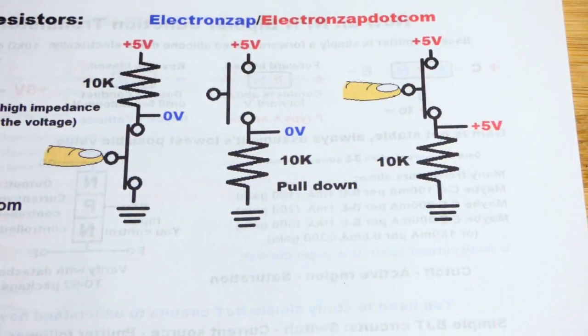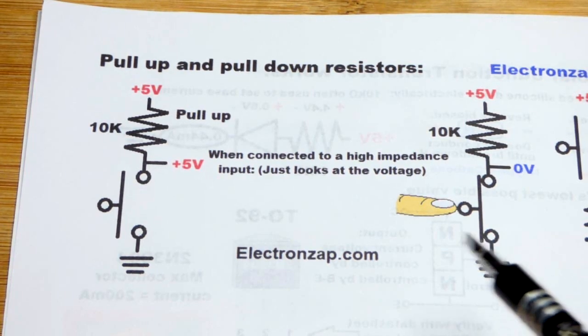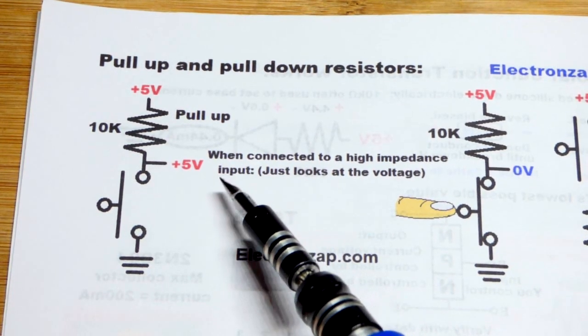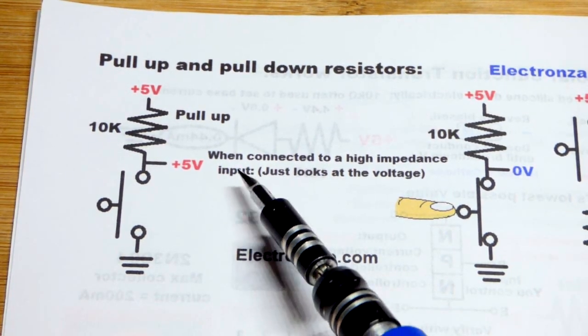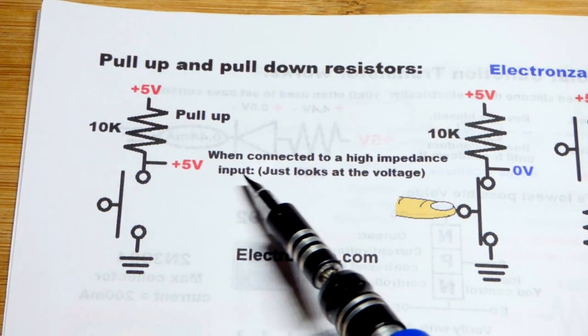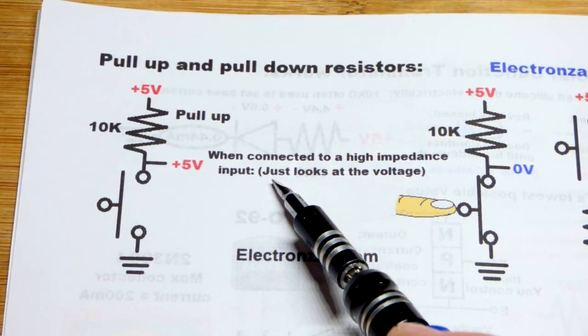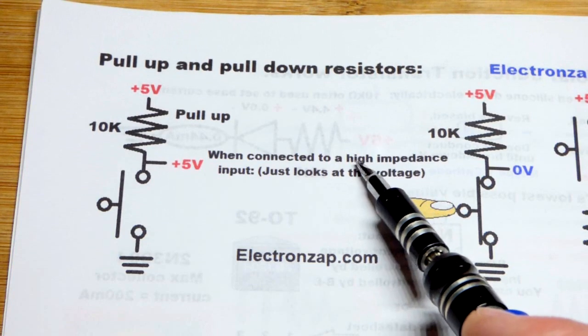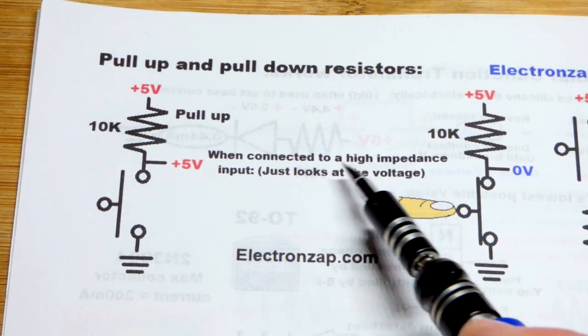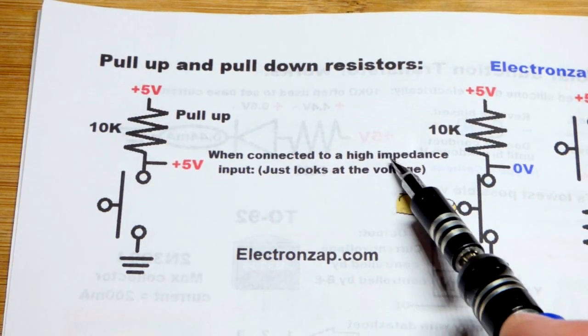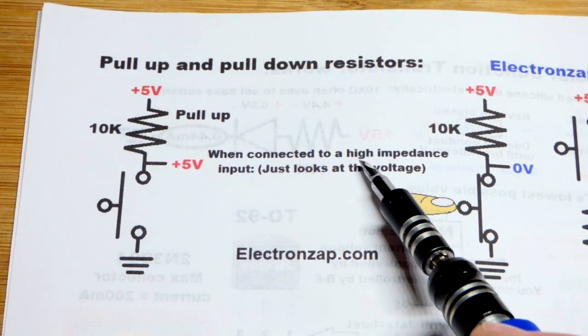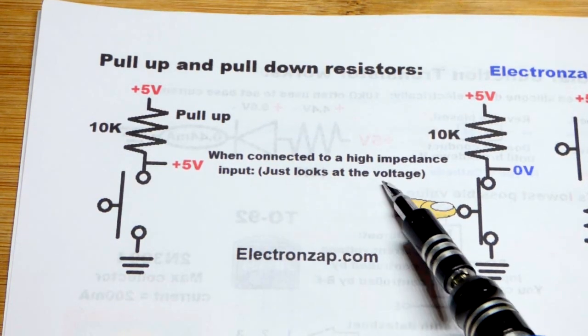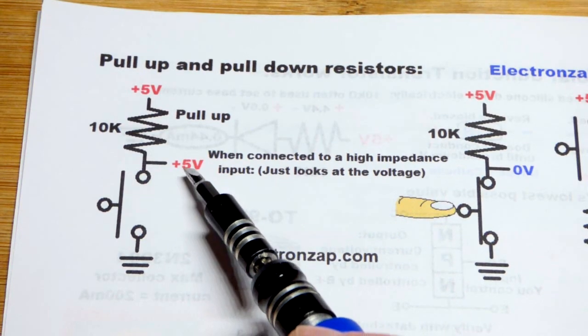Now the reason for these circuits is that the input of many integrated circuits, measuring devices and whatnot, they just look at voltage. They have high impedance, which means they don't let current flow through them—maybe a very tiny amount trickles, but practically no current flows through them. They're just interested in the voltage.